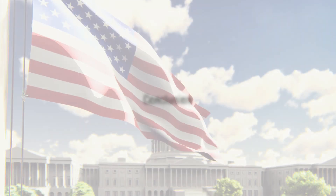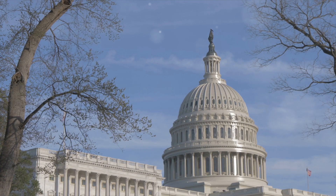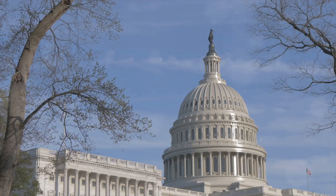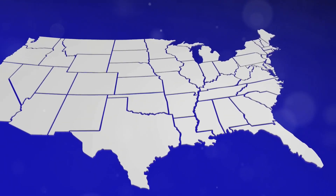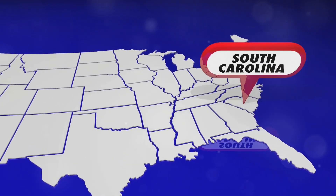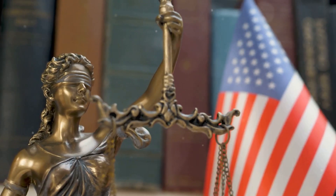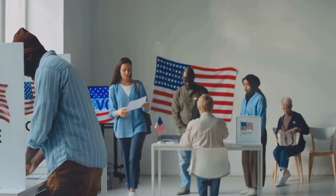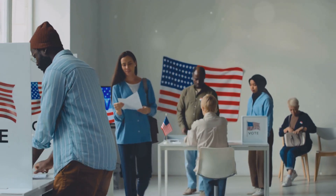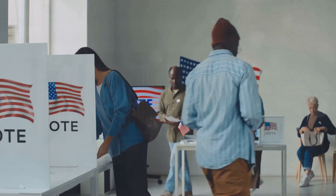In summary, the United States government is a complex system designed to balance power among its three branches and between the federal and state levels. This structure ensures that no single entity can become too powerful, protecting the democratic principles upon which the nation was founded.